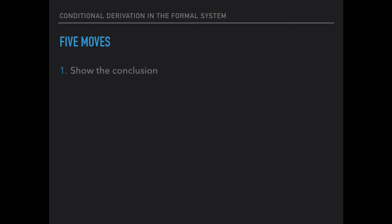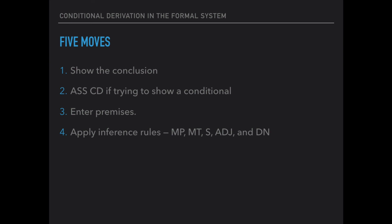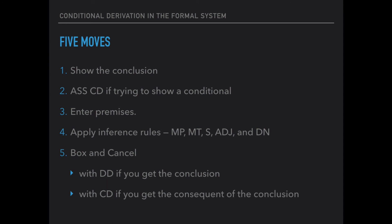Our derivation system now has four or five moves. First, always show the conclusion at the beginning. Then, do AssumeCD if you're trying to show a conditional — if you're not, don't use AssumeCD. Then enter the premises and apply inference rules: modus ponens, modus tollens, simplification, adjunction, and double negation. Finally, box and cancel: use DD if you get the conclusion, or use CD if you're trying to show a conditional and get its consequent. Always box and cancel as soon as you can. More examples using AssumeCD and CD will be demonstrated in another video.